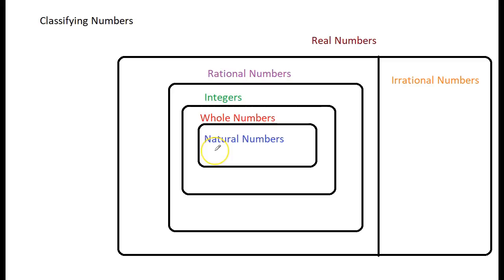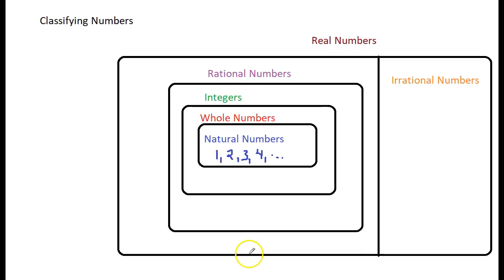Our most basic real number category is natural numbers. Natural numbers are also known as counting numbers. If you had a little cousin who was a kindergartner and you asked them if they knew how to count, they'd say one, two, three, four — those are counting numbers, those are natural numbers. So they're the most basic numbers: one, two, three, four, and so on, going on forever and ever.